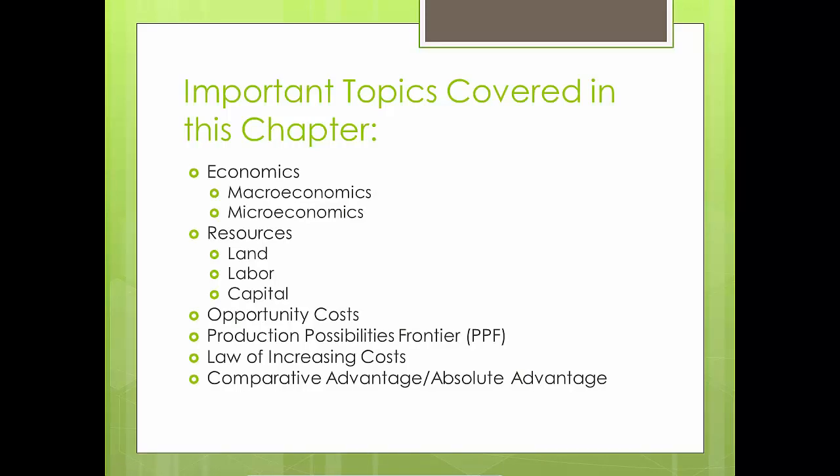I will first talk about what economics is and how it is split up into two branches, micro and macro. The next topic is about resources, and I will explain what resources are and how they relate to econ. I will then explain opportunity costs and how they and the law of increasing costs relate to a production possibilities frontier. Finally, I will go over comparative advantage and absolute advantage.